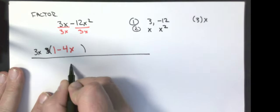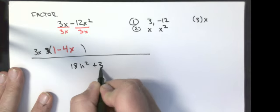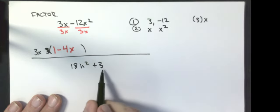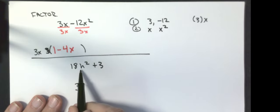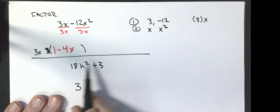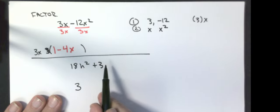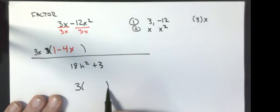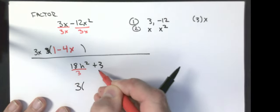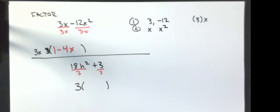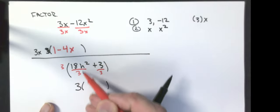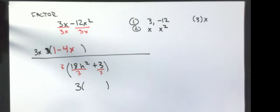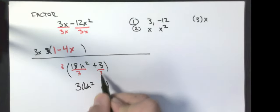Next, factor 18h squared plus 3. The biggest number that goes into both 3 and 18 is 3. I have an h squared and a constant term with no h, so I cannot pull any h's out because there's no h in that term. The result: 3 divided by 3 is 1, and 18 divided by 3 is 6. So the answer is 3 times (6h squared plus 1).